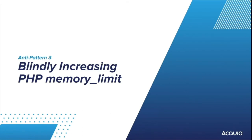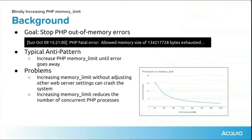My third example is blindly increasing the PHP memory limit. I'm certain if you've done any work on Drupal, you've done this yourself — I've done it plenty of times. The ultimate goal is to get rid of PHP out-of-memory errors in your error log. Often the use case is you're asked to build a page, you build it, it looks great, and then when you deploy it to production it doesn't work as expected. In a good scenario you get part of your page with some missing information; in a bad situation you end up with a blank screen — the white screen of death.